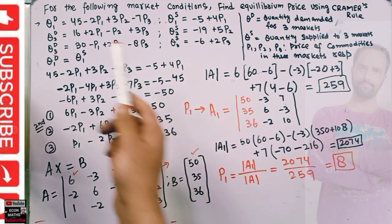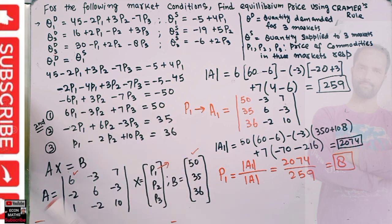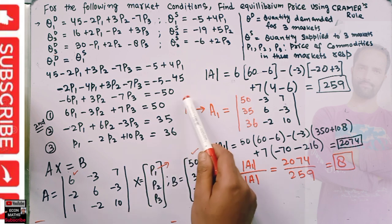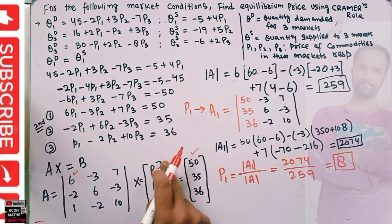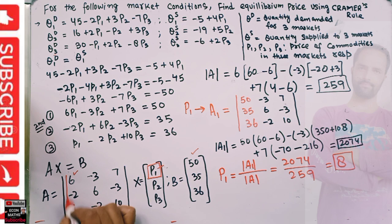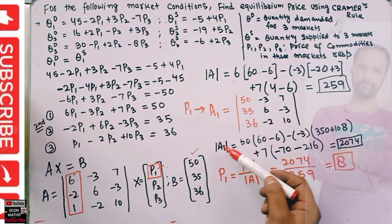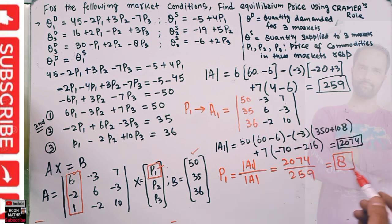To summarize the process so far: first we equate demand and supply in each market to form three linear equations, then write them in matrix form Ax = b. To get p1, we replace the first column of the coefficient matrix with the vector of constant terms, take the determinant of the new matrix, and divide by det(A).